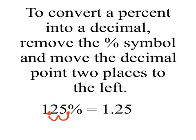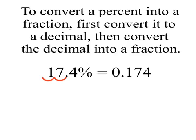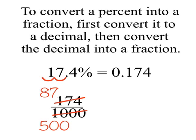Percents that are over 100% will equal numbers that are larger than 1. To convert a percent into a fraction, first convert it to a decimal, then convert the decimal into a fraction. Here's one that we've already converted to a decimal: we'll write 174 one-thousandths using place value and put it in lowest terms by dividing both numbers by 2, giving us 87 five-hundredths.